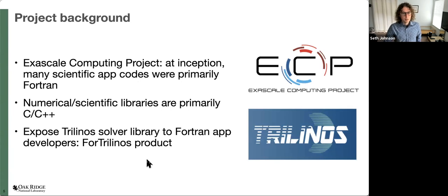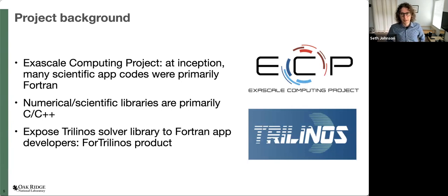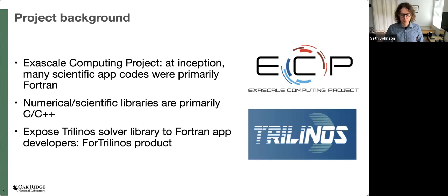ECP has been going on since 2015, so it's at a five-year point. At the original point of inception, many of the scientific application codes were primarily in Fortran. A lot of the capabilities performing at exascale are written in C++ libraries and C++ targeted technologies such as CUDA. So there is a driver for providing high-performance, massively parallel, heterogeneous libraries to Fortran. Trilinos was the specific example — numerical solvers — and that's where SWIG Fortran started and got its initial funding.